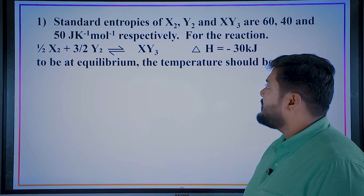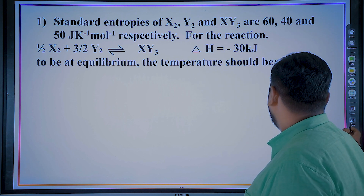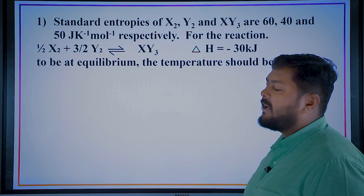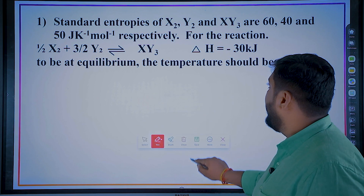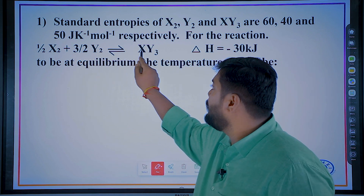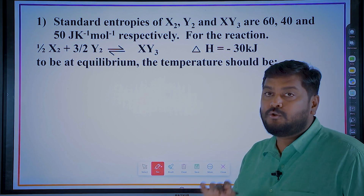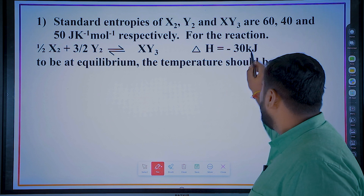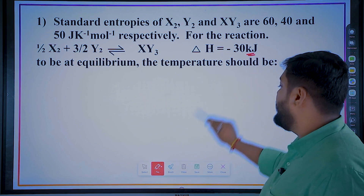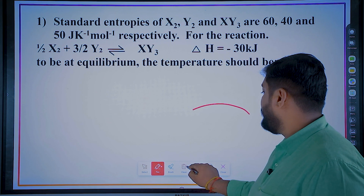The question: standard entropies of x2, y2, and xy3 are 60, 40, and 50 joules Kelvin⁻¹ mol⁻¹. For the reaction: half x2 plus 3/2 y2 gives xy3, ΔH is given as minus 30 kilojoules — note it is given in kilojoules. To be at equilibrium, the temperature should be...?